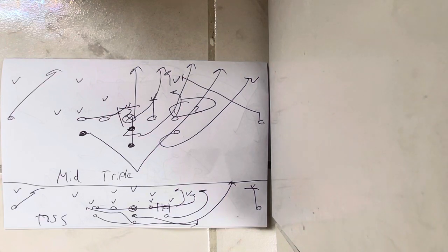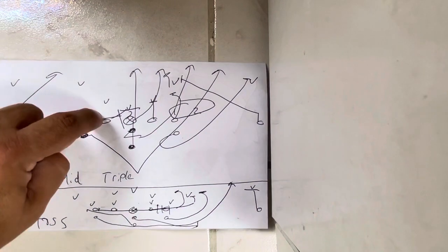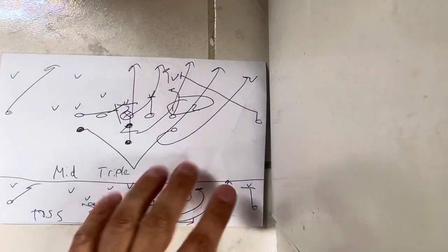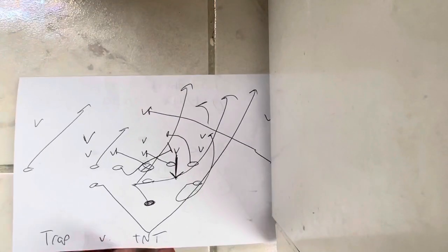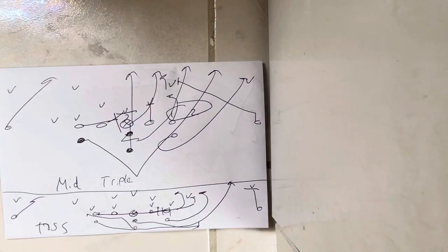But the point of this video is the three T's of spread formation triple option football are the triple option with the mid-triple, number one, the trap, and then the toss. Those are the three T's of spread formation football.